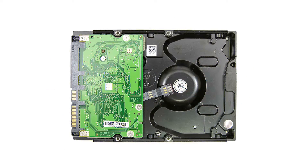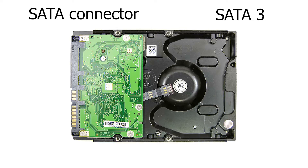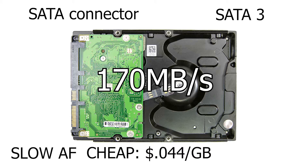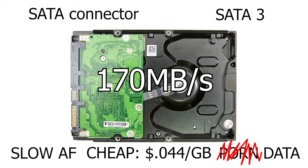Modern hard drives connect to the computer using the SATA connection and the SATA 3 interface. The model I'm using today comes from Western Digital — a drive that operates at 7,200 RPMs. It has a read and write speed of about 170 MB per second, which is quite slow by today's standards. It is super cheap at about 4.4 cents per gigabyte, which is great for anybody that needs to store boatloads of data inexpensively.